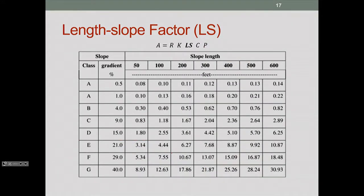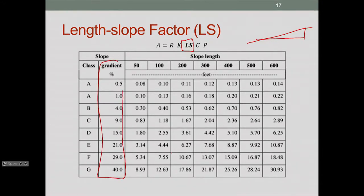The next factor is LS, the length-slope factor, which deals with how steep the land is. There are two pieces: the gradient, which is rise over run measured as a percentage, and the length of the slope in feet. Using a chart that combines both slope length and gradient, you can read off the corresponding LS factor.